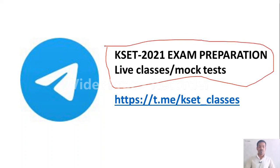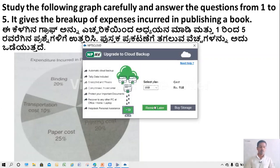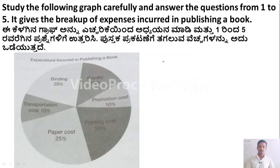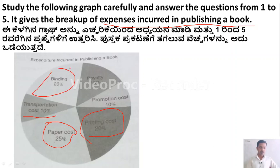Let us move to the questions. The instruction is: study the following graph carefully and answer questions 1 to 5. The graph shows the expenses incurred in publishing a book. The data given is: printing cost 20%, paper cost 25%, transportation cost 10%, binding cost 20%, royalty cost 15%, and promotion cost 10%.